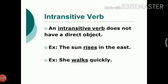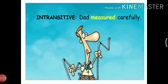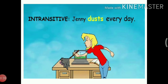Number 6: Intransitive verb. An intransitive verb does not have a direct object. Examples: The sun rises in the east. She walks quickly. The words rises and walks are intransitive, as there can be no object in the sentence using these words. Further examples: I ate quickly. Dad measured carefully. Jenny dusts every day.